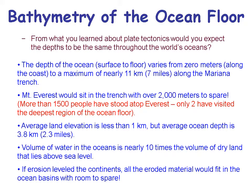The depth of the ocean varies from zero meters along the coast to a maximum of 11 kilometers — about seven miles — deep along the Mariana Trench. Compared to Mount Everest, it would sit in that trench with another 2,000 meters of water above it. The variation of depth in the ocean is much greater than the variation of mountain chains on the surface of the earth. The average land elevation is less than a kilometer, but the average ocean depth is 3.8 kilometers. The volume of water in the ocean is nearly 10 times the volume of dry land above sea level. Praise God — he's put mechanisms in place so that we have land on Earth.